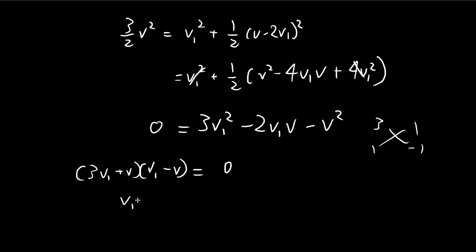So you see we have two solutions. v1 can be equal to v. This is the trivial solution. So this is the case before the collision, so we're not interested in that. And the other case is when v1 is equal to negative v over 3. So this is the answer.